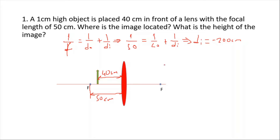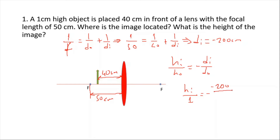For the height of the image, we use the formula: h_image / h_object = -d_image / d_object. The height of the object is 1 centimeter, the image distance is negative 200 centimeters, and the object distance is 40 centimeters. The two negatives cancel, and after calculations the height of the image is 5 centimeters.